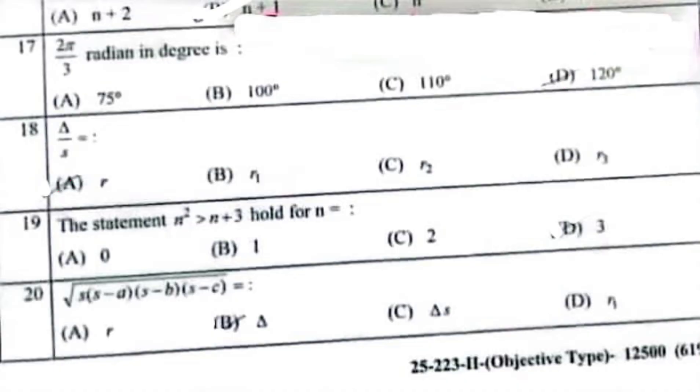Square root of s times (s minus a) times (s minus b) times (s minus c) equals delta. This formula is on page number 379.